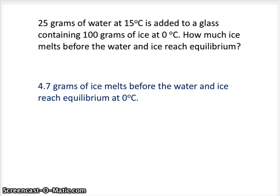And if you go through the math, you should figure out that about 4.7 grams of ice melts before the water and ice reach equilibrium at 0 degrees Celsius. And so what would happen here is you would be left with a glass containing both water and ice, and the water and the ice would both have a temperature of 0 degrees Celsius.